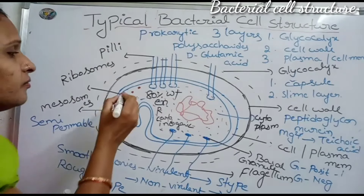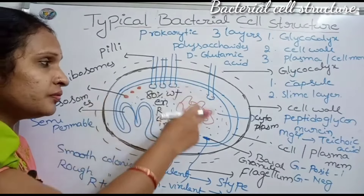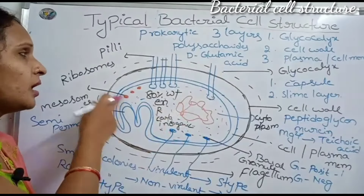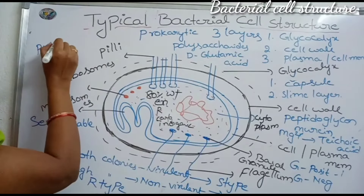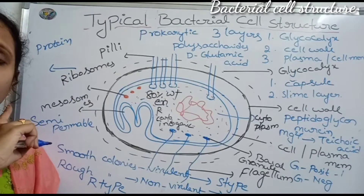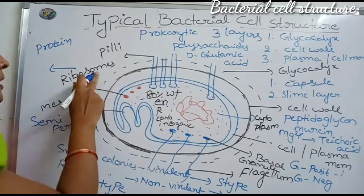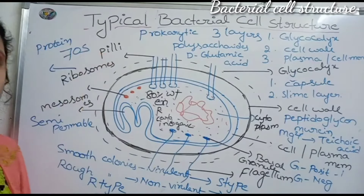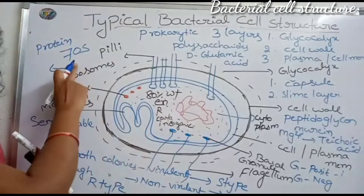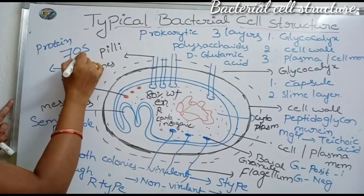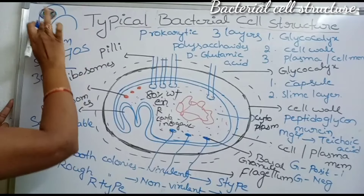Ribosomes are very small organelles without a membrane, so they float freely in the cytoplasm. Ribosomes are the main sites of protein synthesis — very important for MSET students. In prokaryotic organisms, 70S ribosomes are present. The 'S' stands for Svedberg units, named after a scientist.